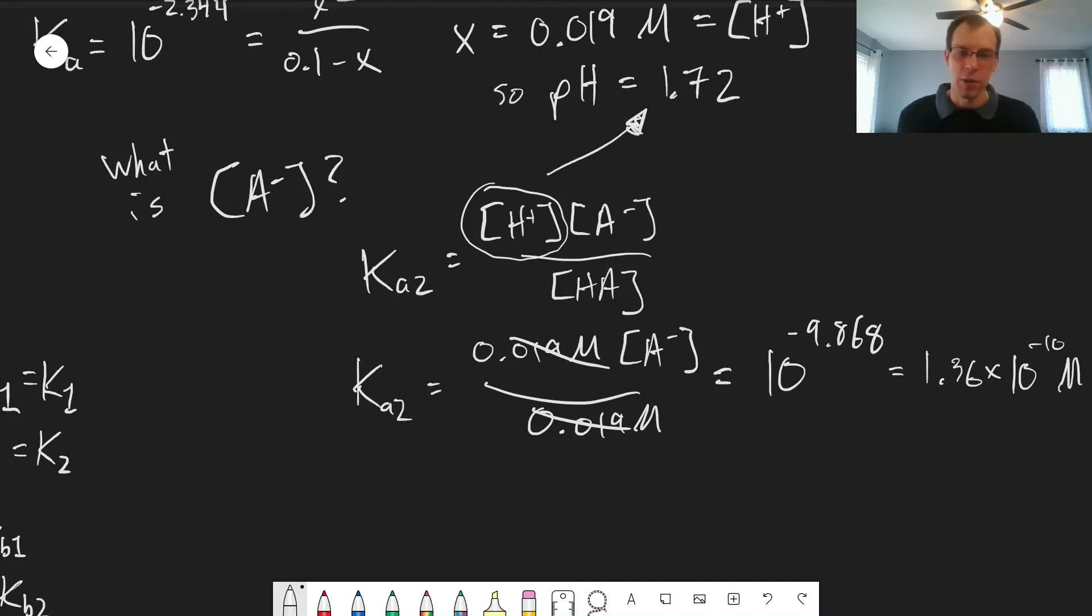So we were justified in ignoring that second equilibrium. This is a very, very small concentration. Almost none of the HA goes on to further dissociate. And that little bit of H plus we'd get from that dissociation is negligible compared to the H plus we get from the first reaction. So we can treat the fully protonated species the same way we would a monoprotic species to consider equilibrium and find the pH.